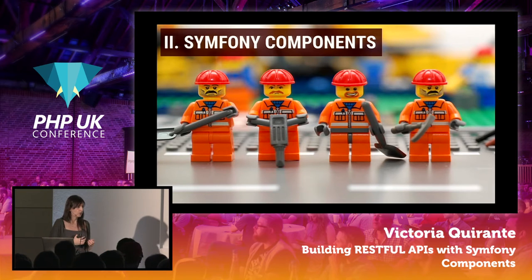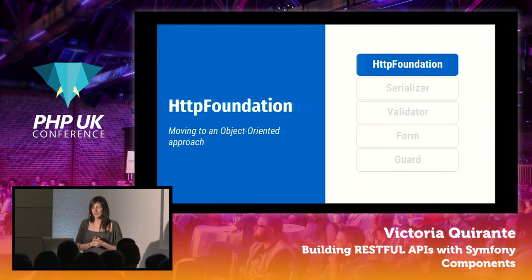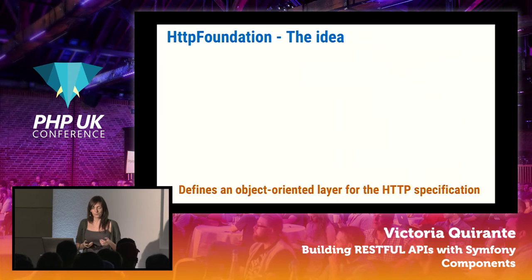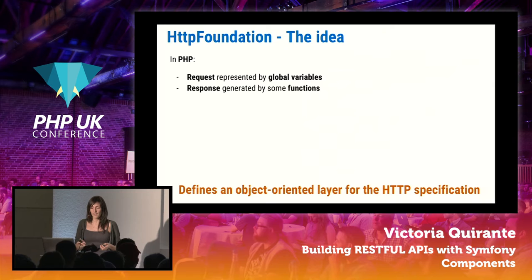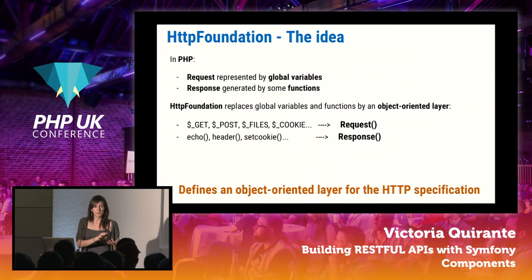Let's see what those components actually do. The first is HTTP Foundation. This one is going to be the foundation of our API, providing an object-oriented layer for the HTTP specification. In PHP, the request is represented by a few global variables and the response is generated by some functions. With this component, those variables and functions are replaced with two nice objects: Request and Response.